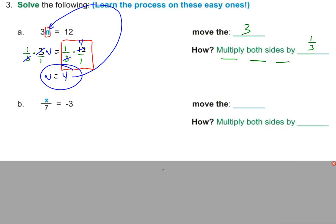So again, what are we going to do? We're going to figure out what do we have to move—the three. It's multiplied times variables, so we're going to move it by multiplying both sides by the reciprocal. What's the reciprocal? One-third.